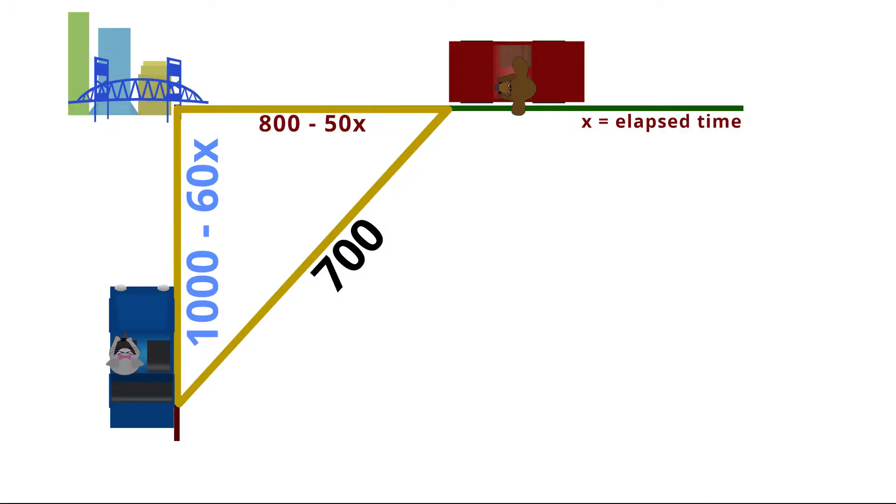For car B, its distance from Springfield would be 1,000 minus 60x because it is traveling at 60 miles per hour.